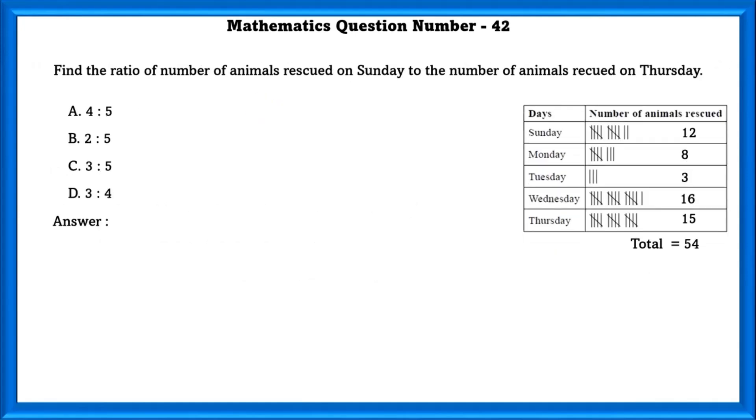Mathematics question number 42. Find the ratio of number of animals rescued on Sunday to the number of animals rescued on Thursday. Ratio is equal to 4 is to 5.